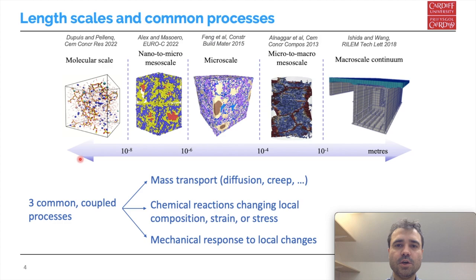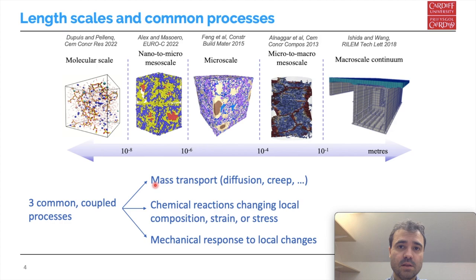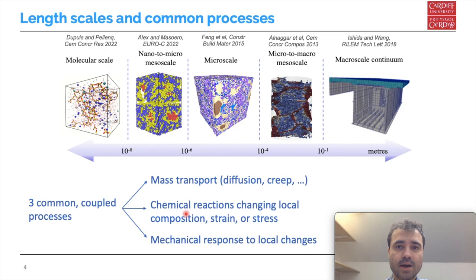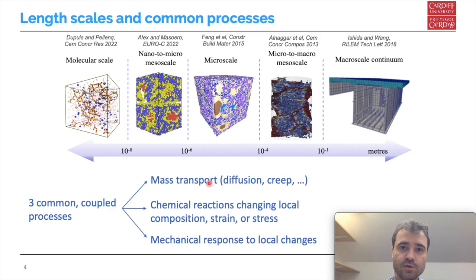Rather than focusing on one degradation mode in particular, I want to look at the common aspects of modeling all these processes. There are three processes common to all degradation modes: first, the transport of mass, like the diffusion of ions or the viscous flow of the solid; then there are chemical reactions that may directly change the local composition or generate pressure inducing local expansion, as with ettringite; and then there is the mechanical response of the material to these local changes, which may lead to damage and cracks, which in turn may change diffusivities. These three processes are all coupled together.